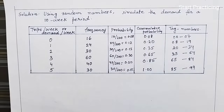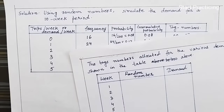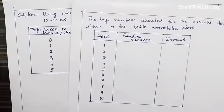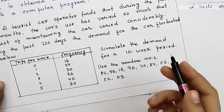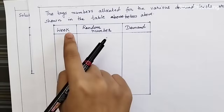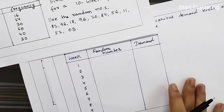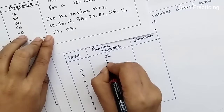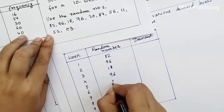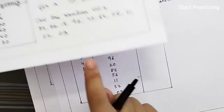The tag numbers are allocated for the various demand levels as shown in the table above. We make a table for 10 weeks because the question asks to simulate the demand for a 10-week period. The random numbers given are: 82, 96, 18, 96, 20, 84, 56, 11, 52, and 3.